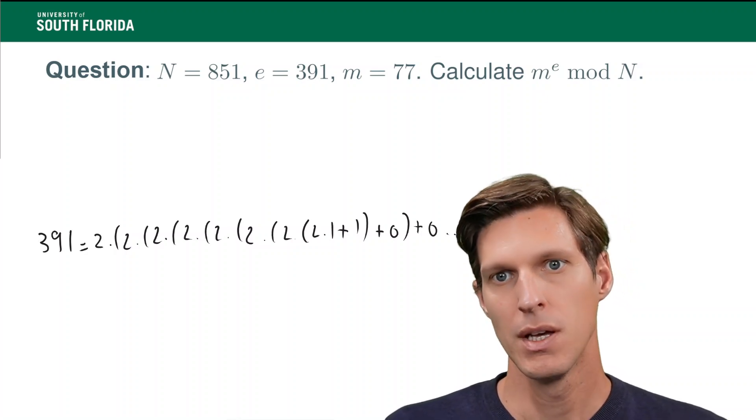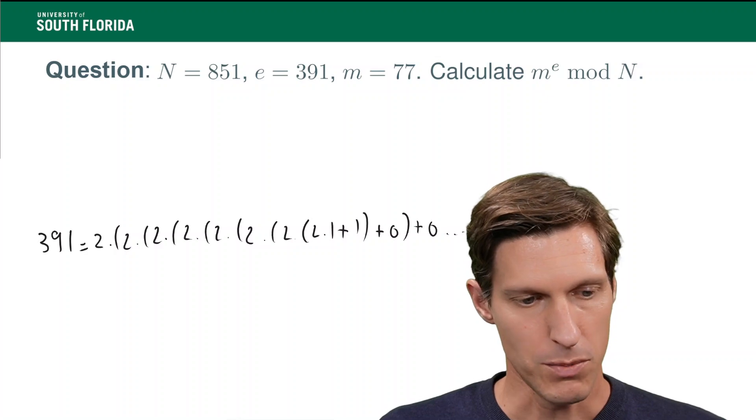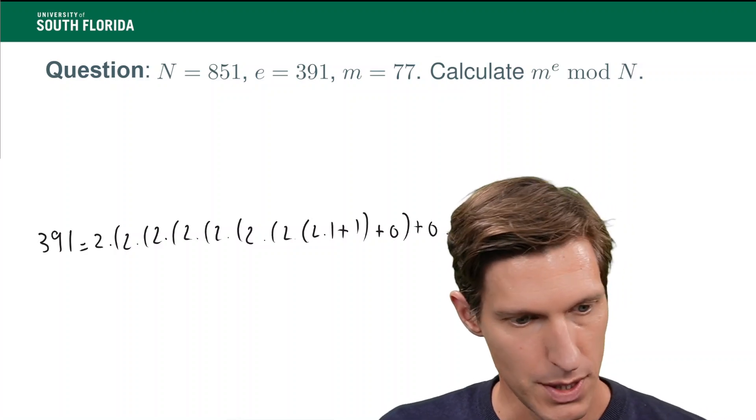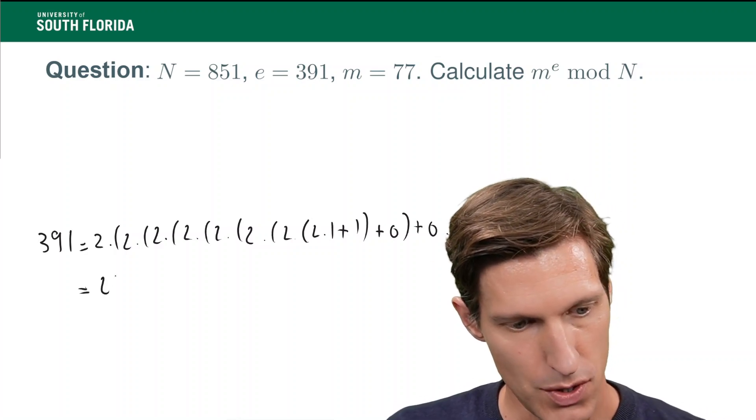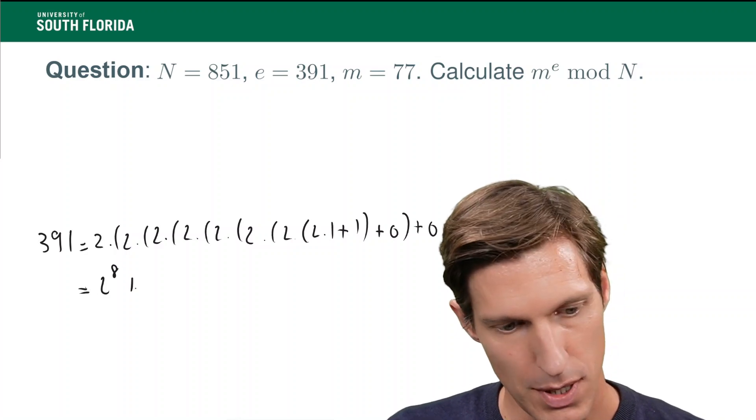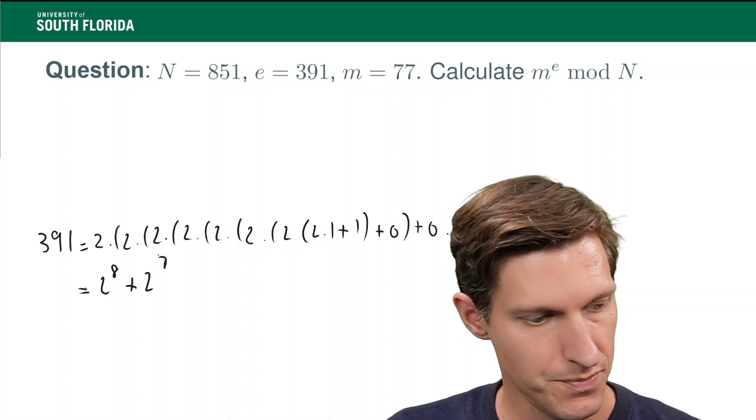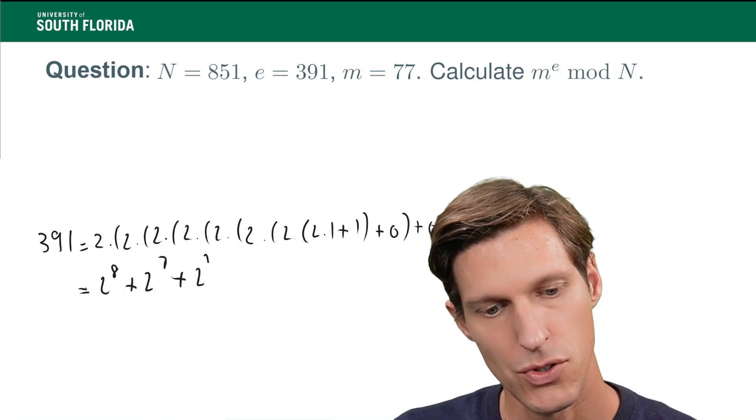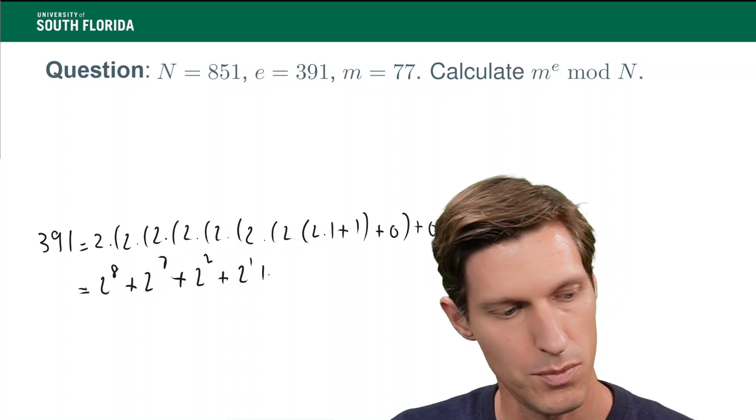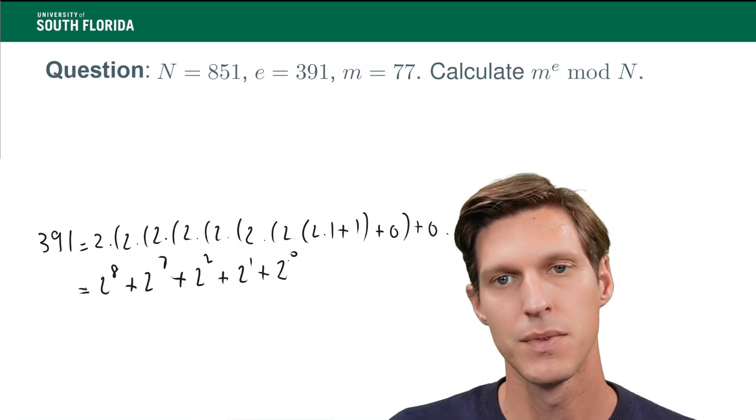But in the end, what it will tell you is that this is two to the eight, plus two to the seven, plus two to the two, plus two to the one, plus two to the zero.